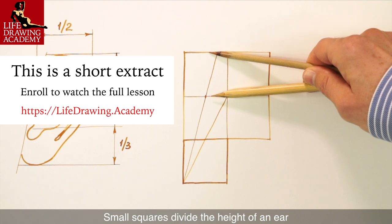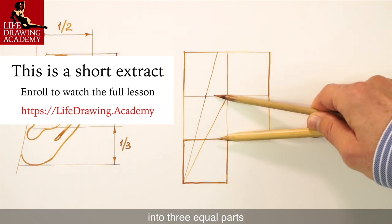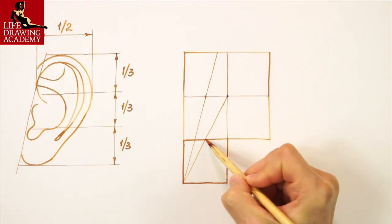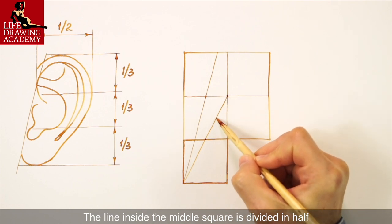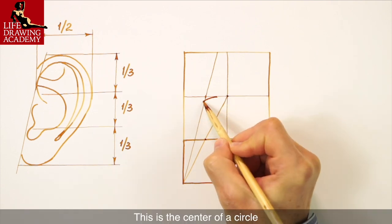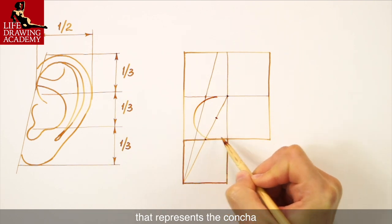Small squares divide the height of an ear into three equal parts. The line inside the middle square is divided in half. This is the center of a circle that represents the concha.